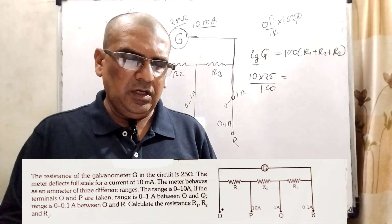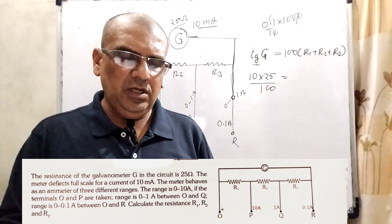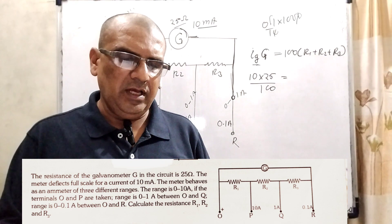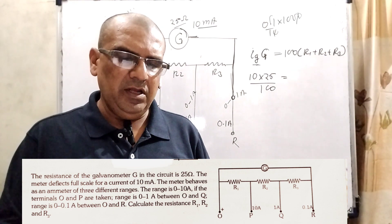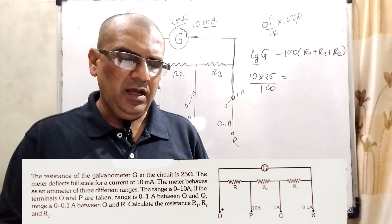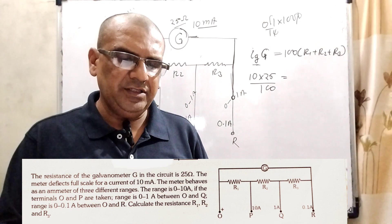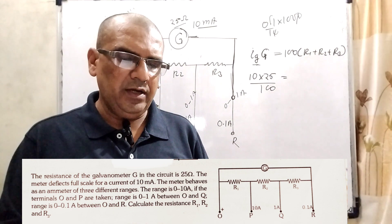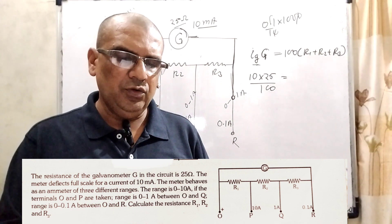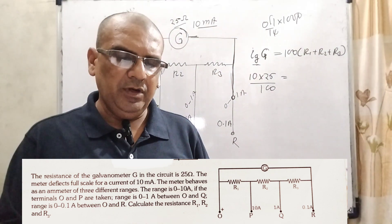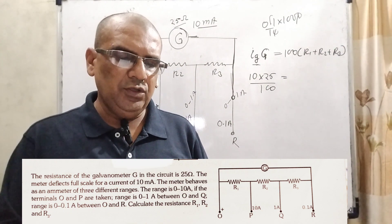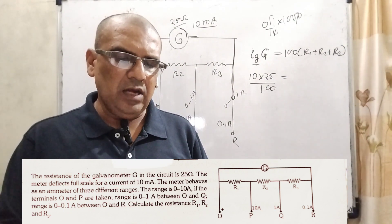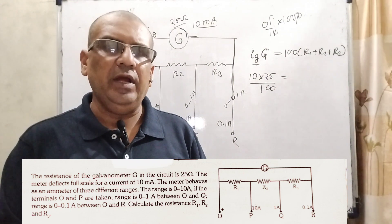Now here is the question. The resistance of the galvanometer G in the circuit is 25 ohm. The meter deflects full scale for a current of 10 milliampere. The meter behaves as an ammeter of three different ranges: 0 to 10 ampere between terminals O and P, 0 to 1 ampere between O and Q, and 0 to 0.1 ampere between O and R. Calculate the resistance R1, R2 and R3.